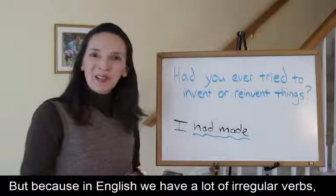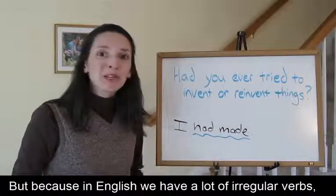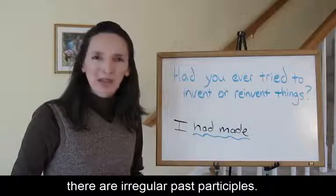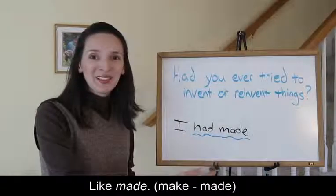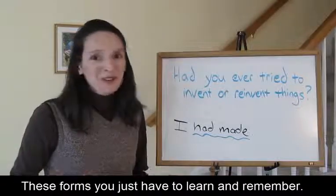To form the past perfect, we use had for all subjects plus the past participle. For regular verbs, that's an ED ending. Try, tried. But because in English we have a lot of irregular verbs, there are irregular past participles. Like made, make, made. These forms you just have to learn and remember.